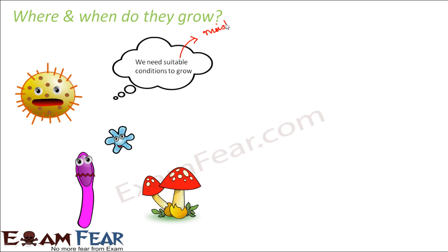Mostly, microorganisms prefer places where they have moisture, and they also need a warm temperature. So warm temperature and moisture are the two things that favor the growth of most microorganisms. If we provide such a suitable environment, there is a probability that these organisms will grow.